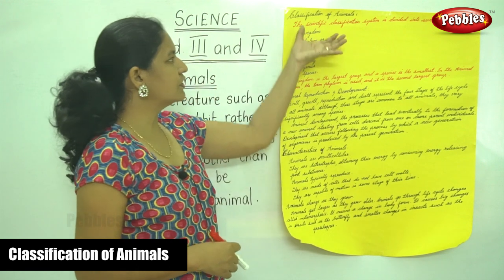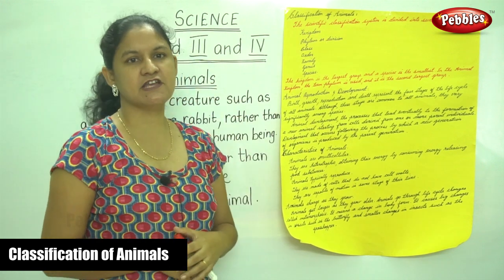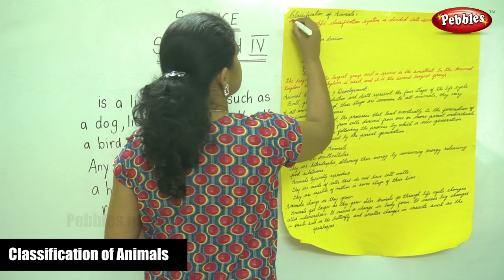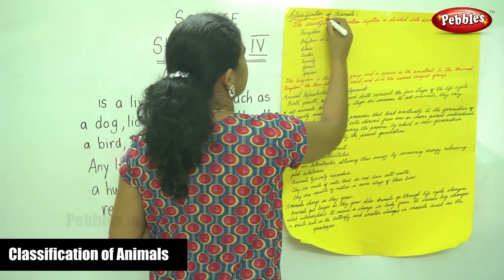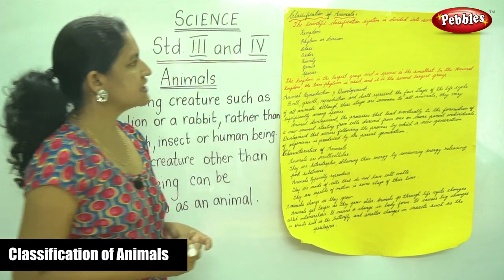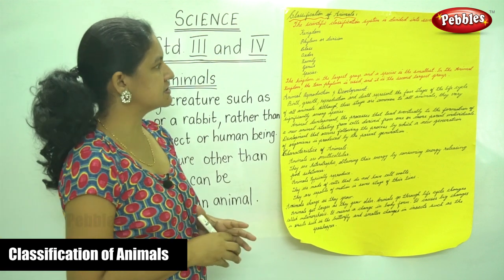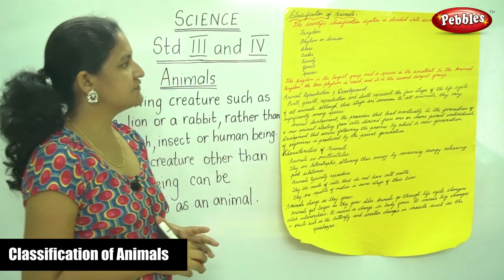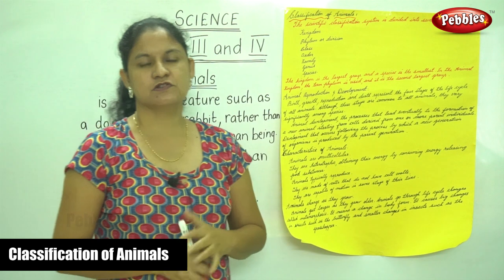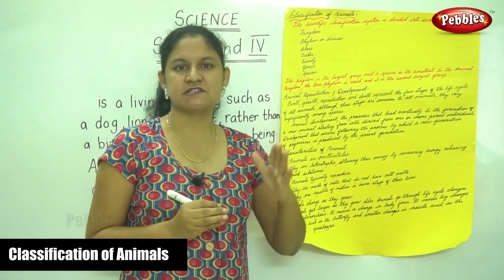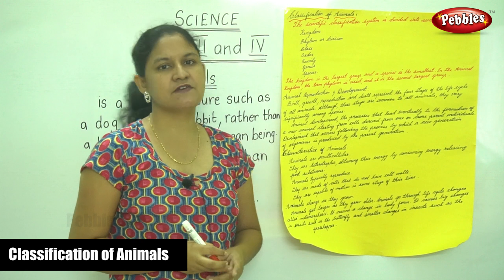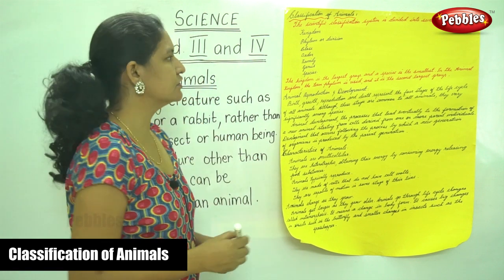The animals fall into different categories that we will be seeing in our future classes. Now we are going to see the classification of animals. The scientific classification system is divided into seven major groups.